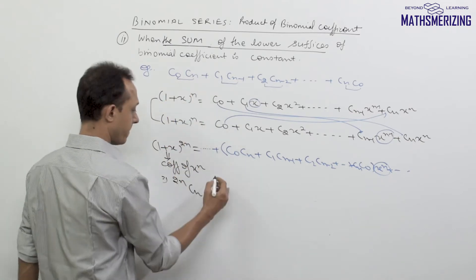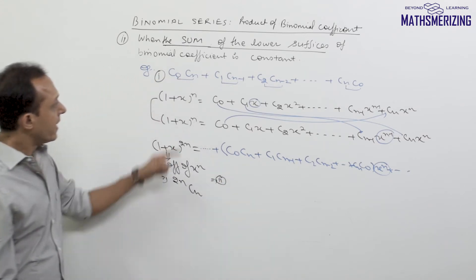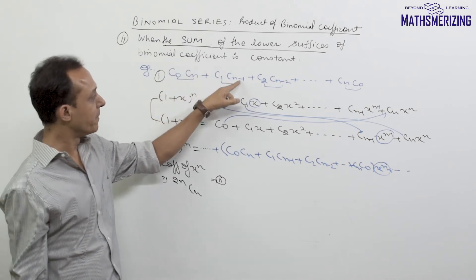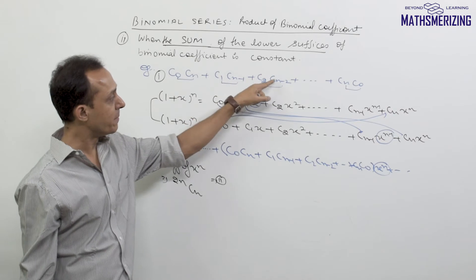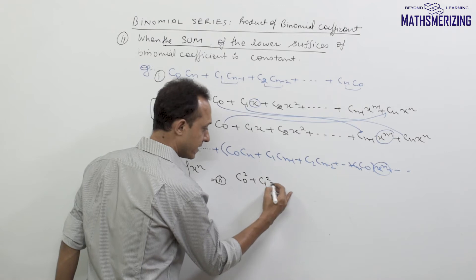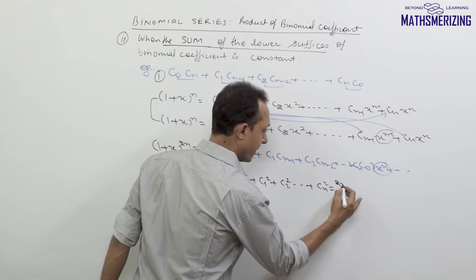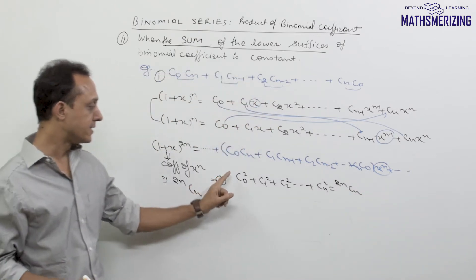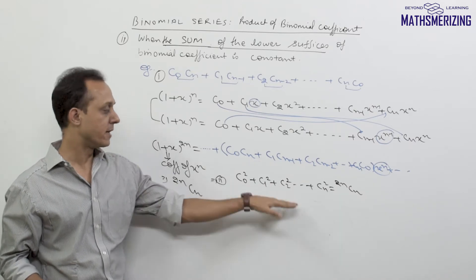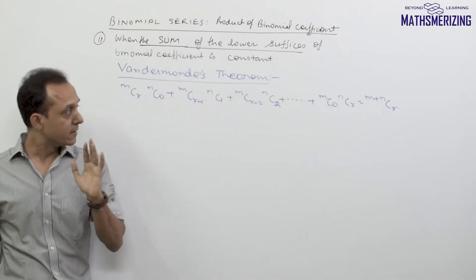We can also write this result using the identity nCr = nC(n-r): nCn = nC0, nC(n-1) = nC1, nC(n-2) = nC2. So the same result can be written as C0² + C1² + C2² + ... + Cn² = 2nCn, which matches the case where the difference of suffixes is constant.